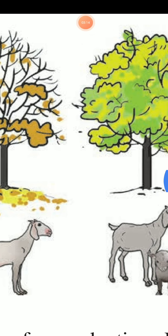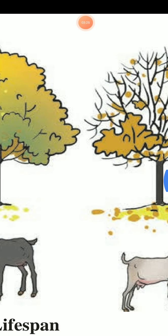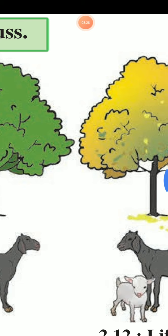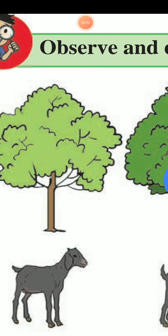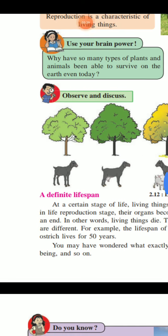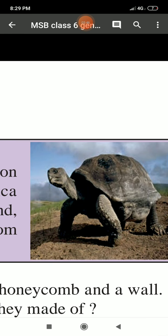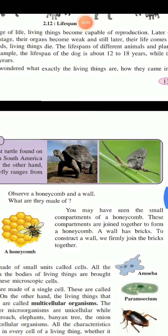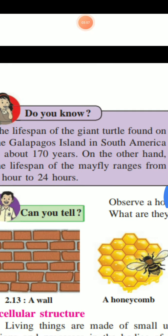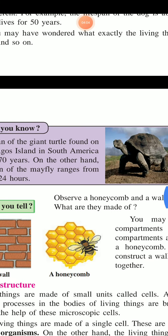You may have wondered what exactly living things are and how they come into being. Each living thing has a specific life span. The life span of a giant turtle found on the Galapagos Island in South America is about 170 years. On the other hand, the life span of the mayfly ranges from 1 hour to 24 hours.